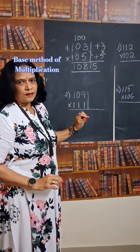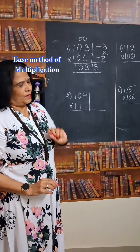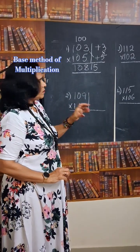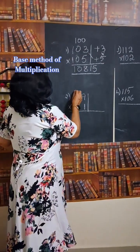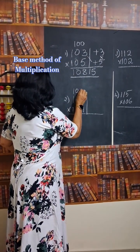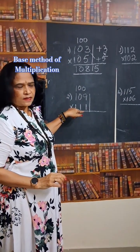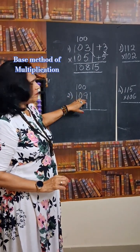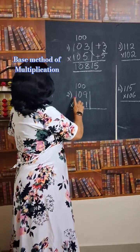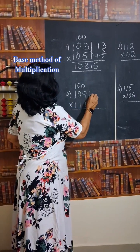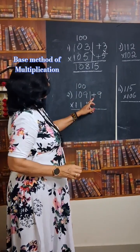Number is 109 multiplied by 111. What we should do? First we should write the base of the number. That means it is very near to 100. So the base is 100. Subtract the given number by base. 109 minus 100. That will be 9. I am writing plus 9. It is above base.